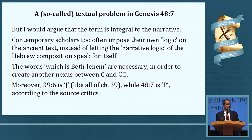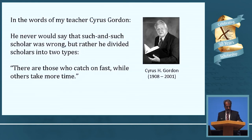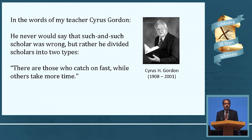The documentary hypothesis fails us again: Genesis 39 is supposed to be J and Genesis 48 is supposed to be P, but all of this is thought out in advance by a master architect storyteller who needed all these words to have his units linked together. I end by quoting my teacher Cyrus Gordon, who himself made several visits to BYU. Gordon never said a scholar was wrong; he divided scholars into two types: 'There are those who catch on fast, while others take more time.' All of us in this room have caught on fast. Unfortunately, there are still those who need more time. Thank you.